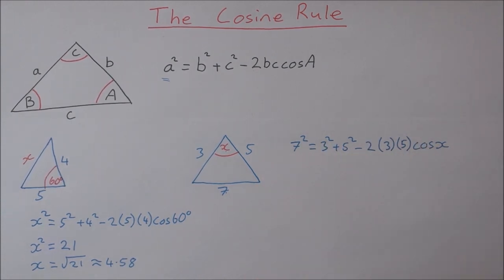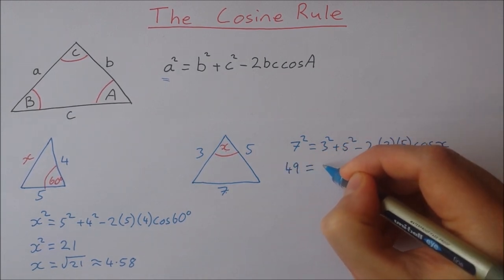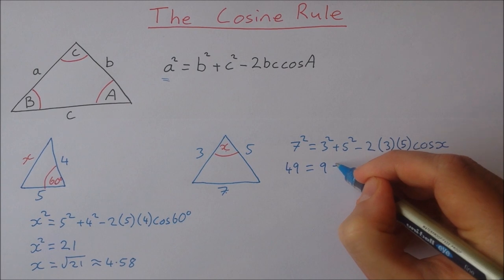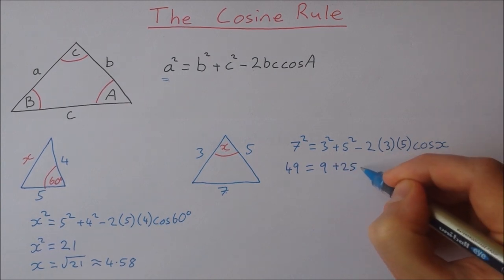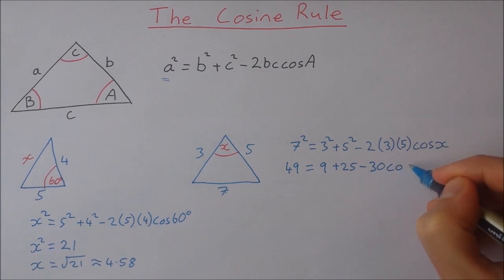So I'll start just by multiplying everything out here. So 7 squared is 49. 3 squared is 9. 5 squared is 25. Minus 2 times 3 times 5 is minus 30. And we're looking for cosine x.